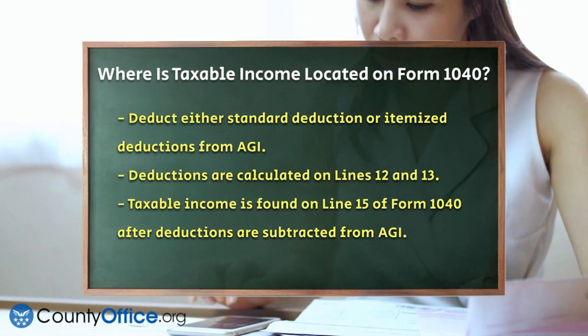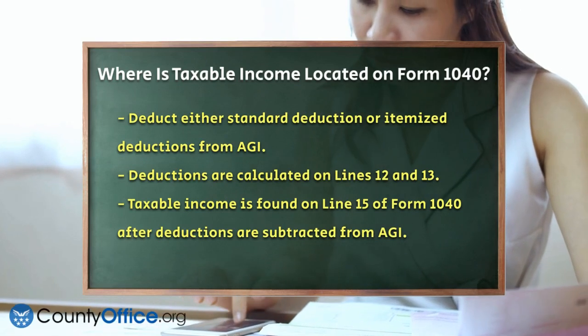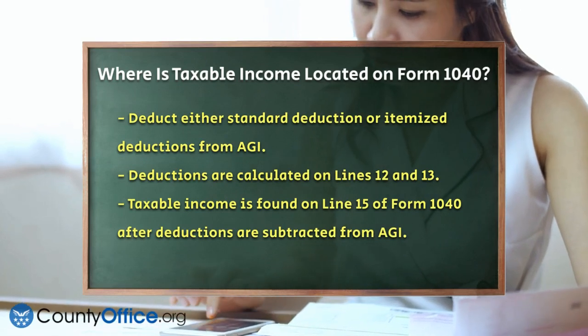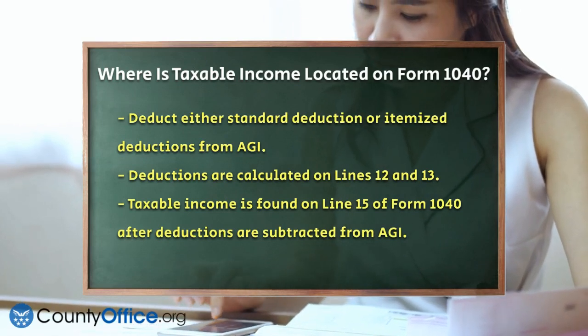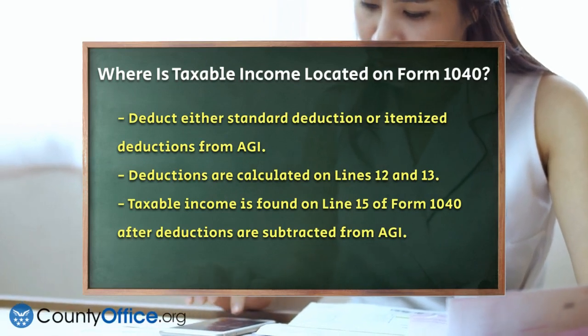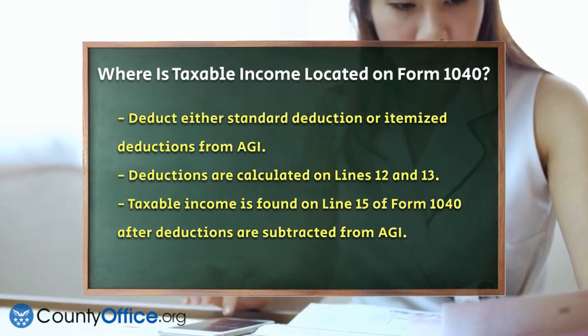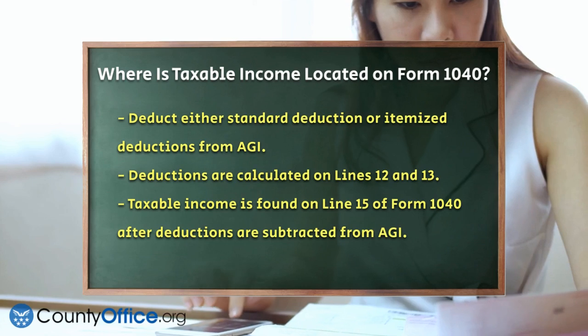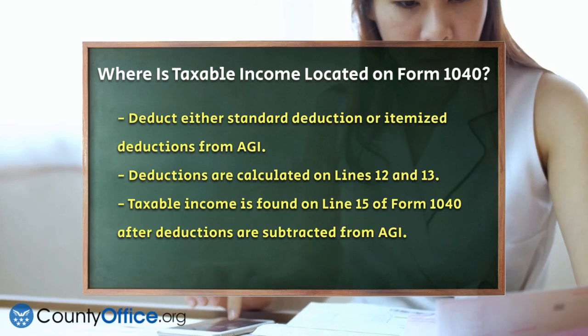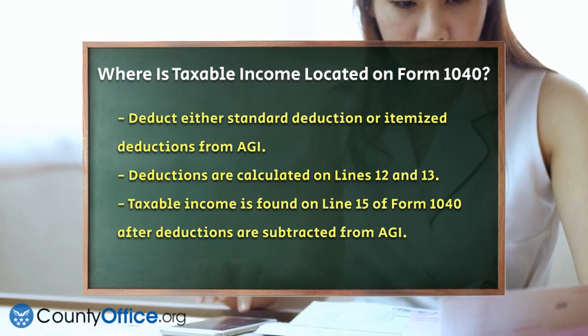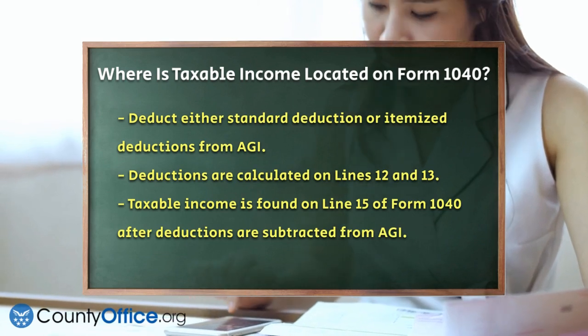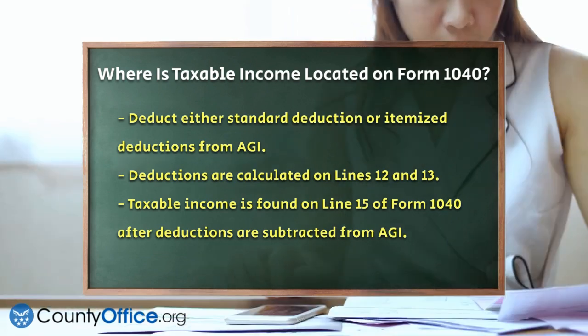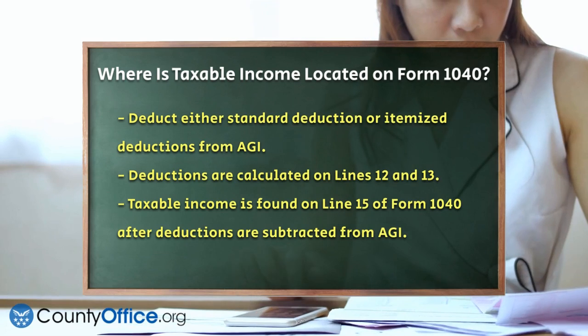To summarize, your taxable income is the result of subtracting your deductions from your adjusted gross income, and it's located right on Line 15 of your Form 1040.